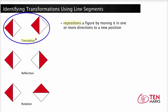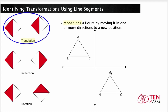Since the shape and size do not change in any of these three transformations, not only will the corresponding side pairs in the pre-image and image be congruent, but the left side will be congruent to the left side, the top to the top, and so on. So let's look at this picture: triangle MNO is the image of triangle ABC after it has been translated.